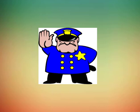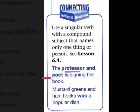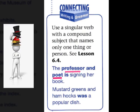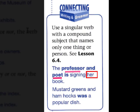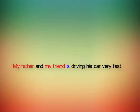But be careful, there is something tricky here. We use a singular verb with a compound subject that names only one person. For example: 'The professor and the poet is signing her book.' In this sentence, we're talking about one person wearing different hats — one person doing different jobs. We know it's one person because of the pronoun 'her book'. Another example: 'My father and my friend is driving his car very fast' — because I'm talking about one person, I use a singular verb.